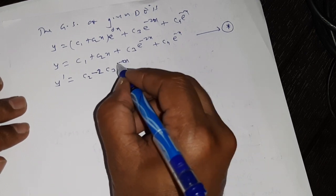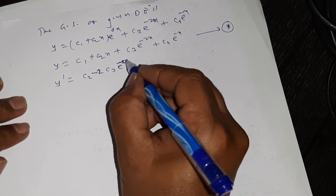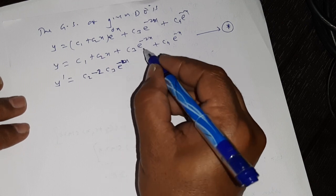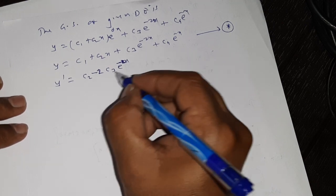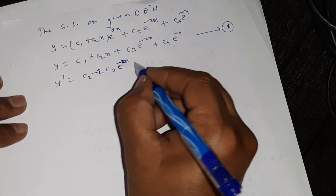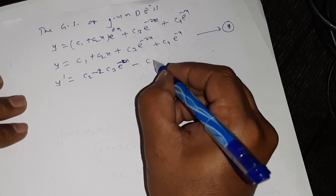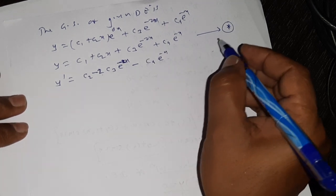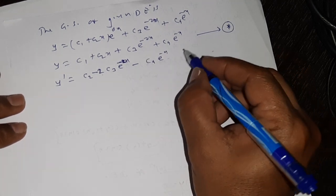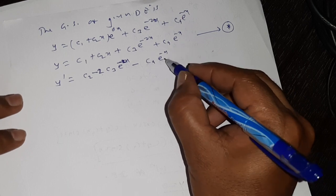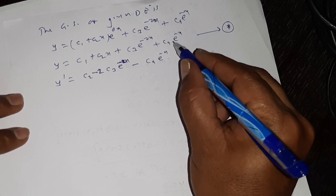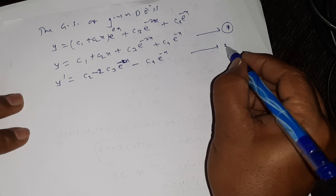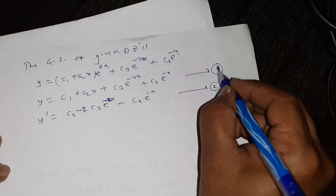The derivative of e^(-2x) is e^(-2x) times (-2). Similarly, the derivative of e^(-x) is e^(-x) times (-1). So we have this — suppose this is equation number 2.